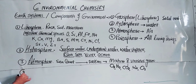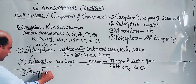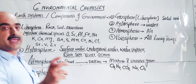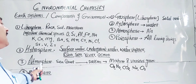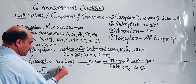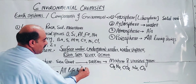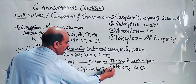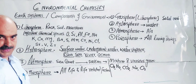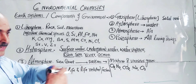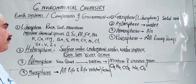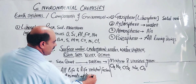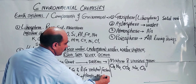The fourth and last component is the Biosphere. Bio means life. The Biosphere is the component of the environment that relates to all living things — all life and life-related factors. It includes plants, animals, and microorganisms — all living things.